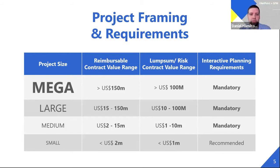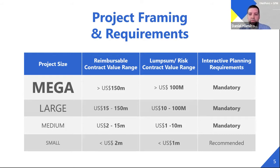For large projects — $15 million to $150 million reimbursable or $10 million to $100 million lump sum — it is also mandatory to do interactive planning sessions. Medium projects, $2 million to $15 million reimbursable or $1 million to $10 million lump sum, are also mandatory. Small projects, anything less than $2 million reimbursable or less than $1 million lump sum, are a recommended practice. Most small projects do conduct interactive planning, but usually it's just the PM and the scheduler building a level two or three schedule, not a full blown session like the big projects.